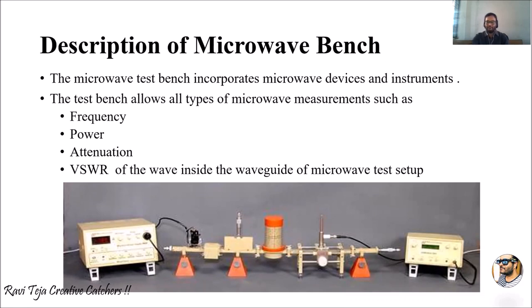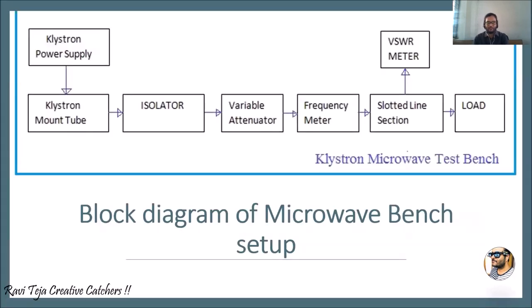The block diagram representation shows: the klystron power supply connected to the klystron mount tube, which connects to an isolator, then a variable attenuator, then a frequency meter, then a slotted line section. The slotted line section is connected to a load, which can be of various types.